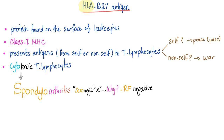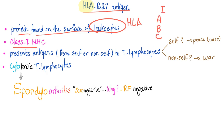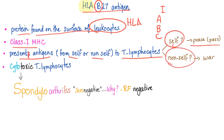HLA-B27 antigens are proteins found on the surface of leukocytes — that's why we call them human leukocytic antigens. They are class 1 MHC because class 1 was A, B, and C, and we're talking about B here. They present antigens from self or non-self to the T lymphocyte — this is called antigen presentation. If it's part of us, it gets a pass, but if it's non-self, it's on. Since they are part of class 1 MHC, they will interact with the cytotoxic T lymphocyte.